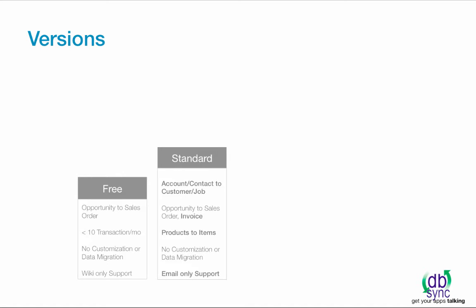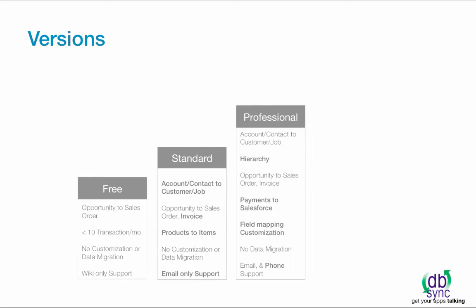Standard — get additional automated business processes from opportunity to sales order and invoice. Professional — manage hierarchy, payment integration, and field mapping with more control than the standard version.